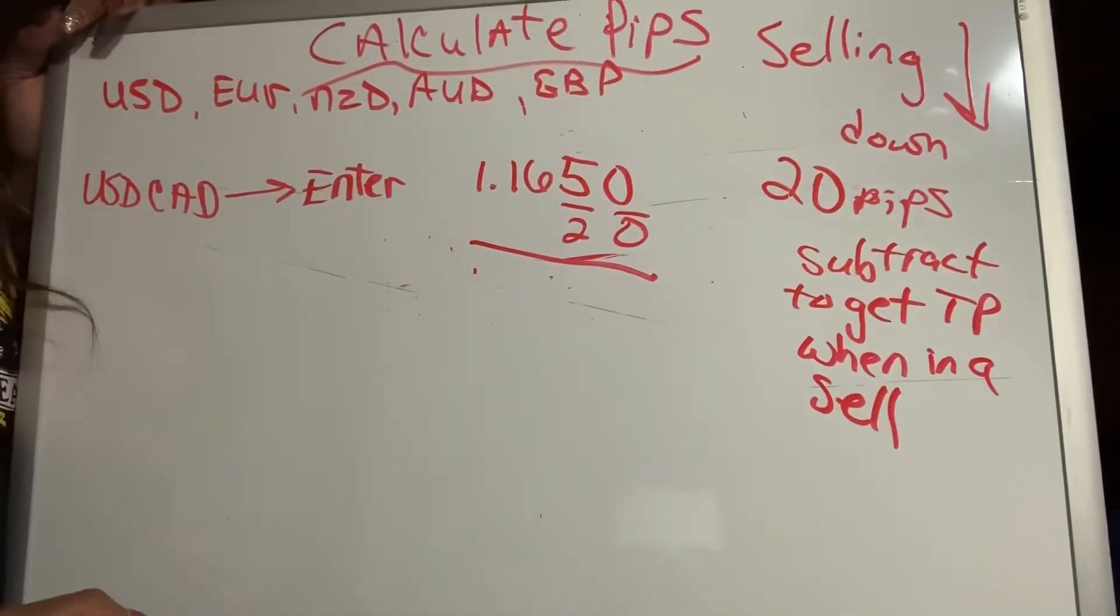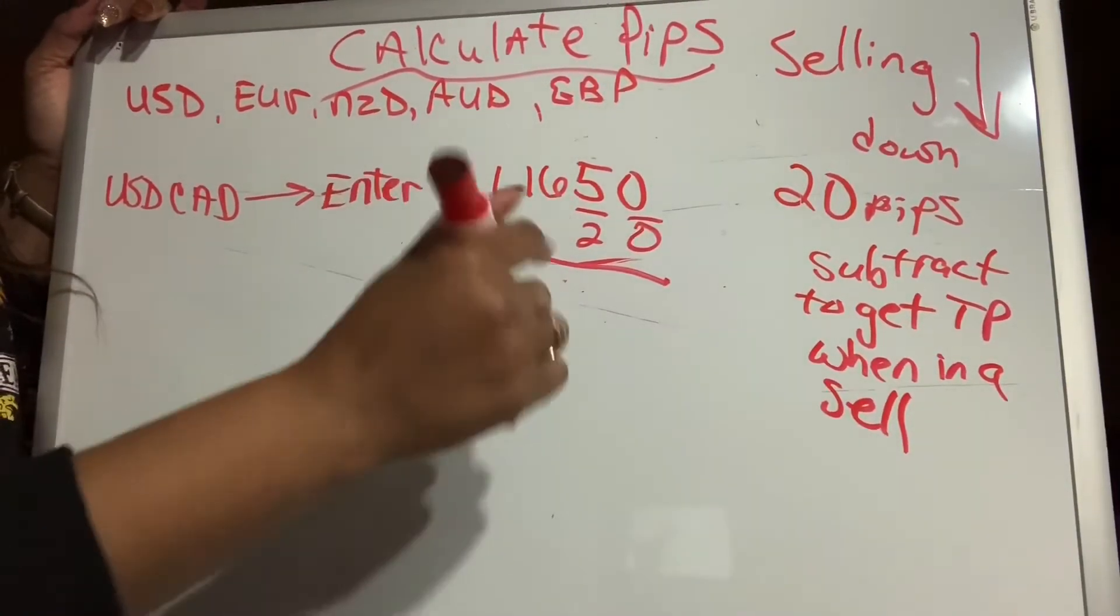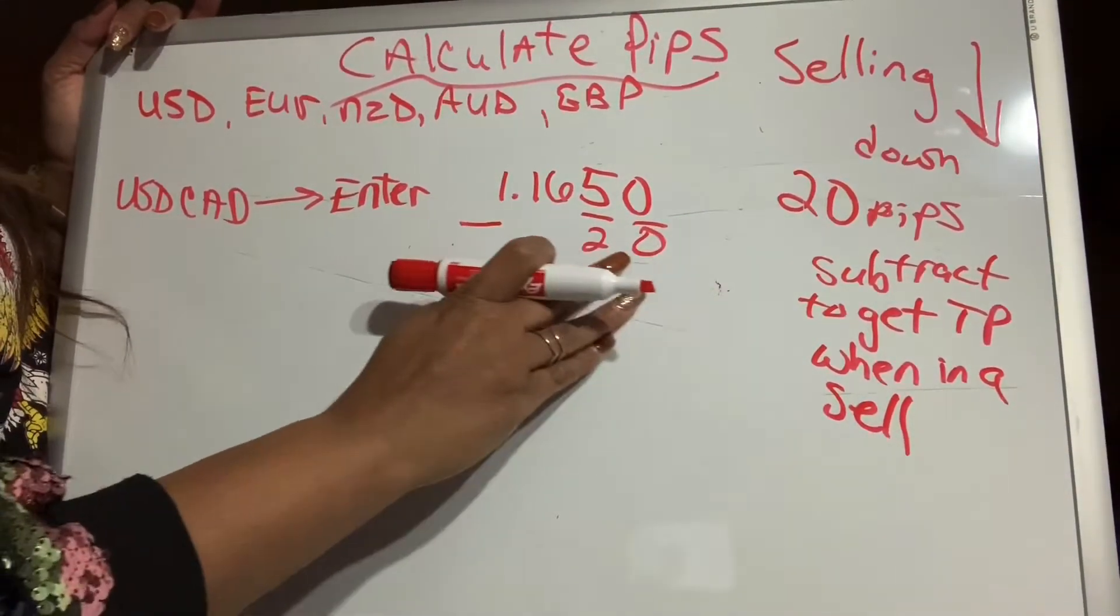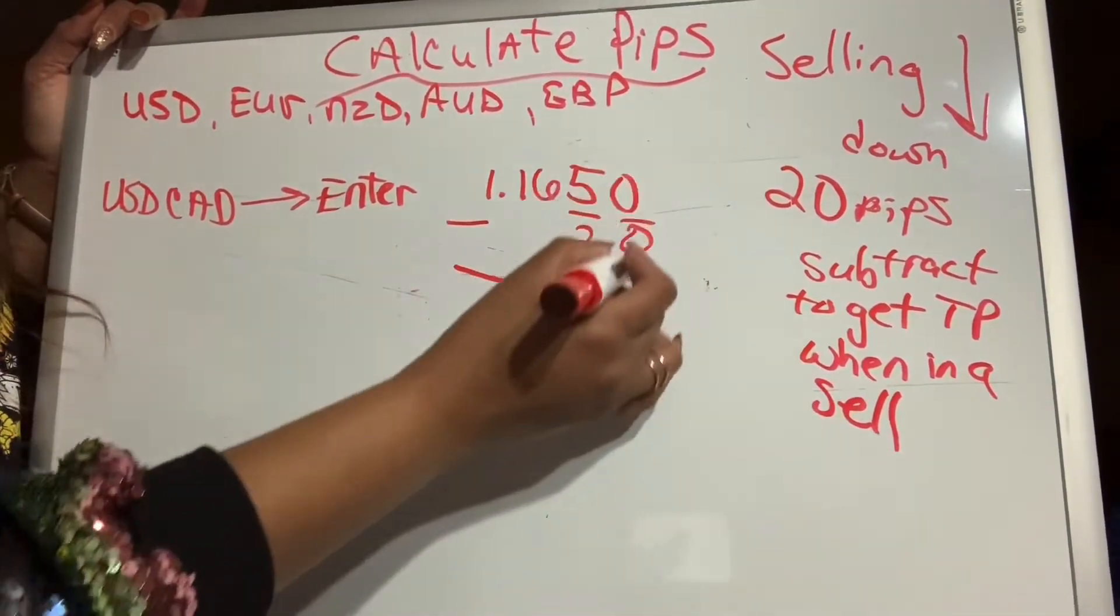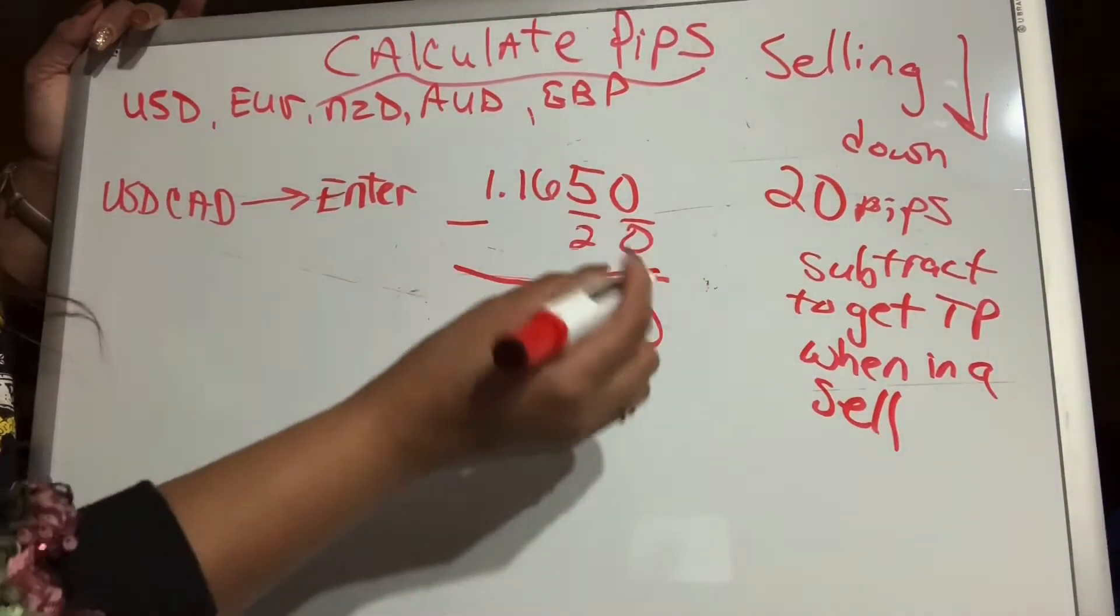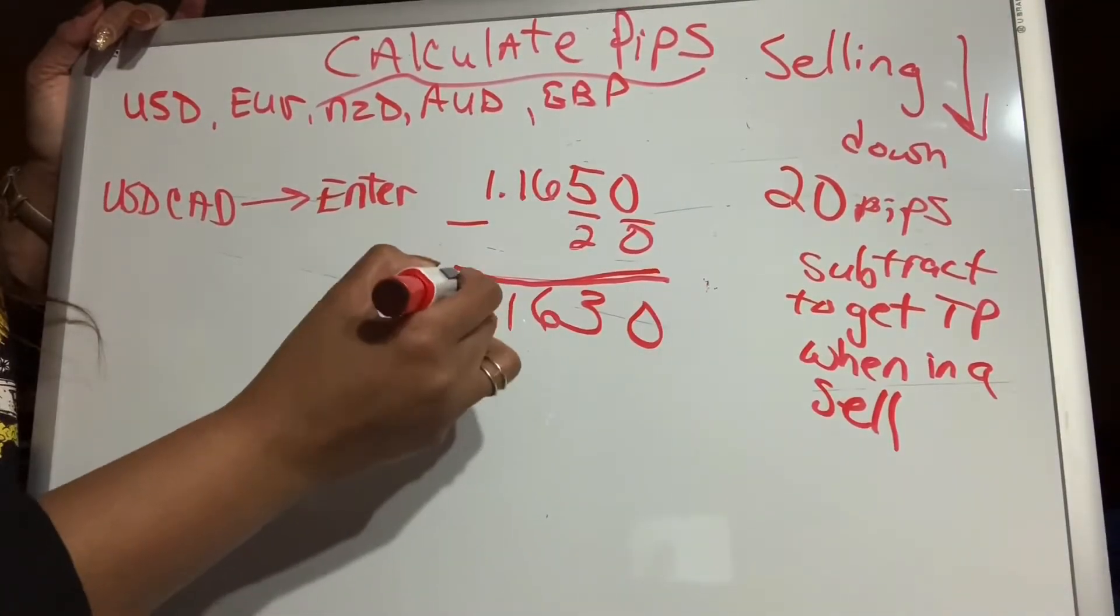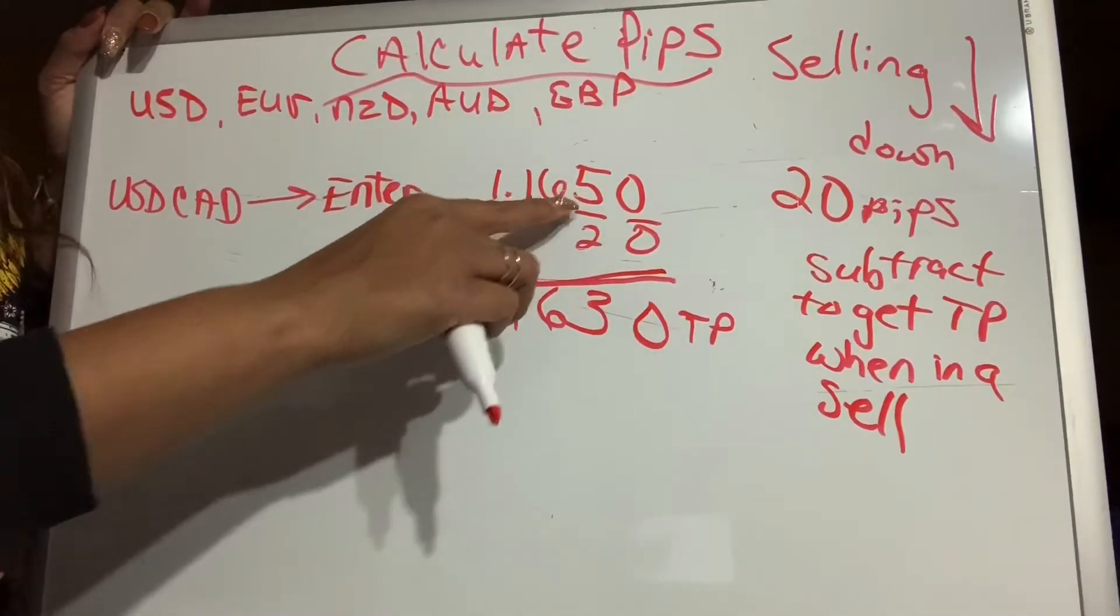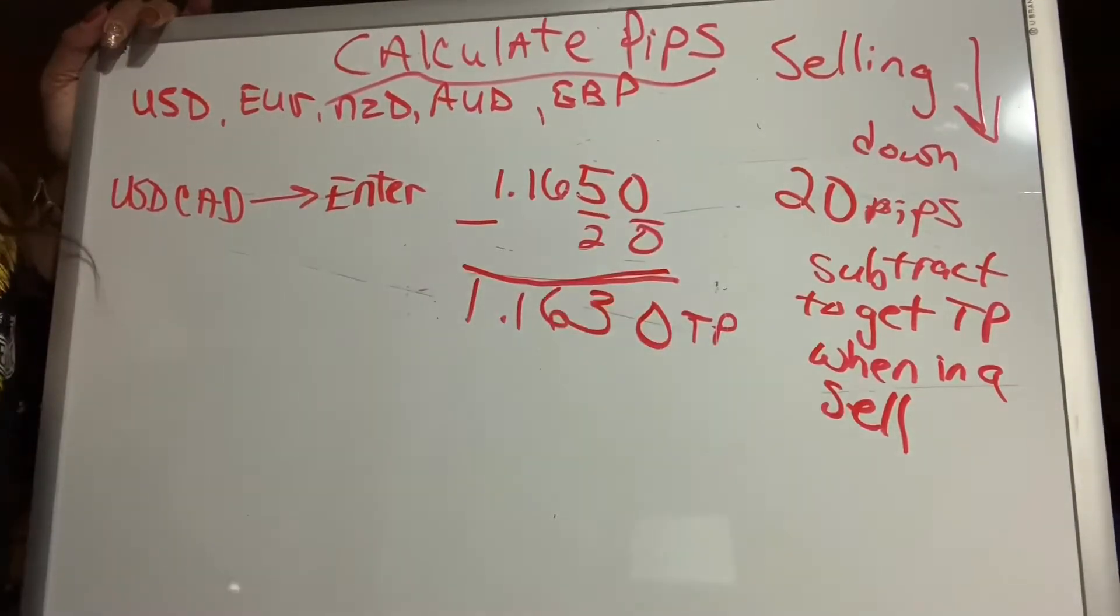When you're in a sale, you subtract to get your TP. So we want to catch 20 PIPs going down. We started and entered the market here. So now we want to subtract 20 to get our TP. So zero minus zero is zero. Remember, we're only affecting the third or fourth number from the decimal. 5 minus 2 is 3. Bring down our 6. Automatically bring down the rest of the numbers. This is our TP. This price point is lower than where we entered. And that's what we want. In a sale, you want the market to drop. I caught 20 PIPs.